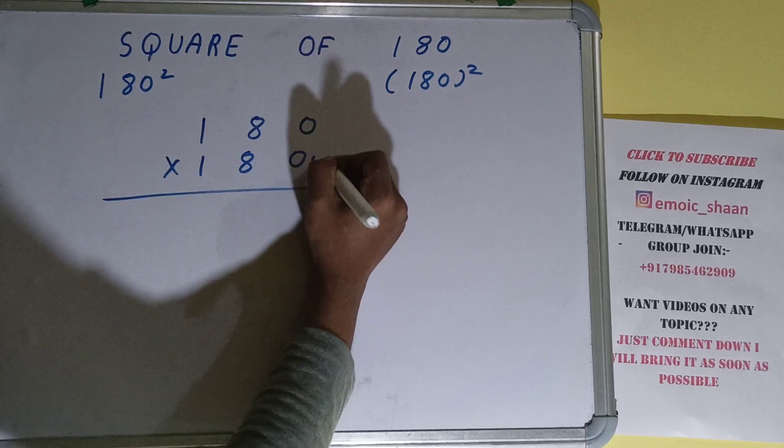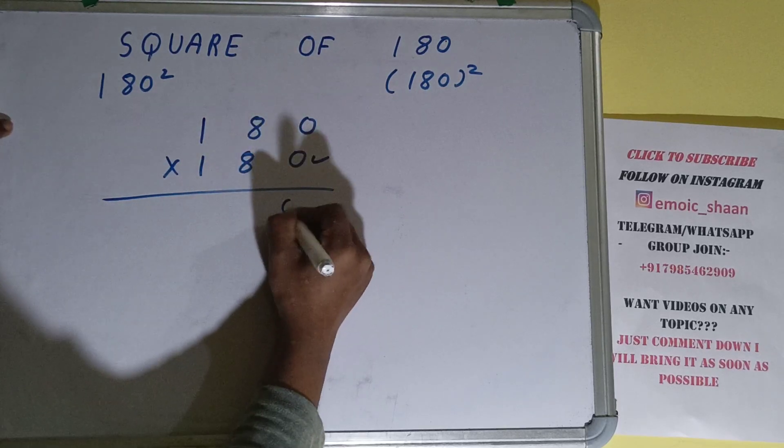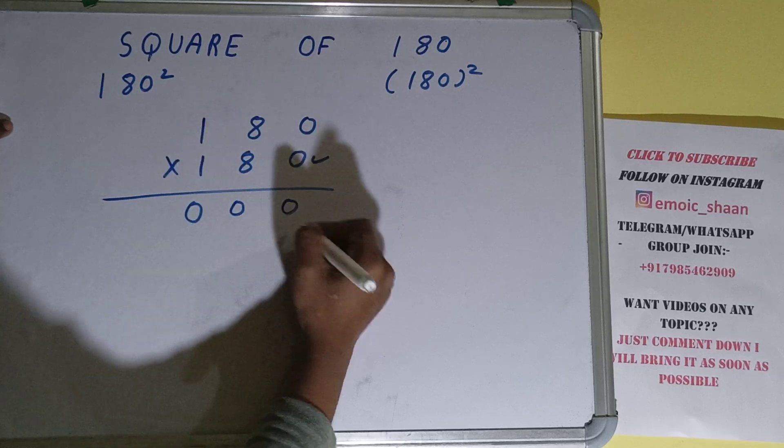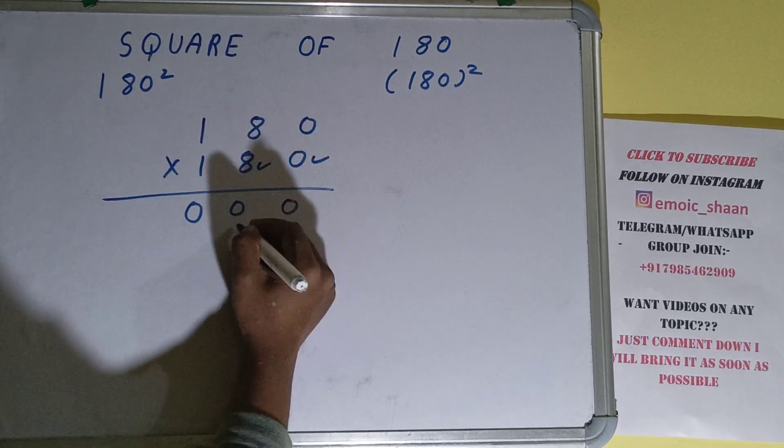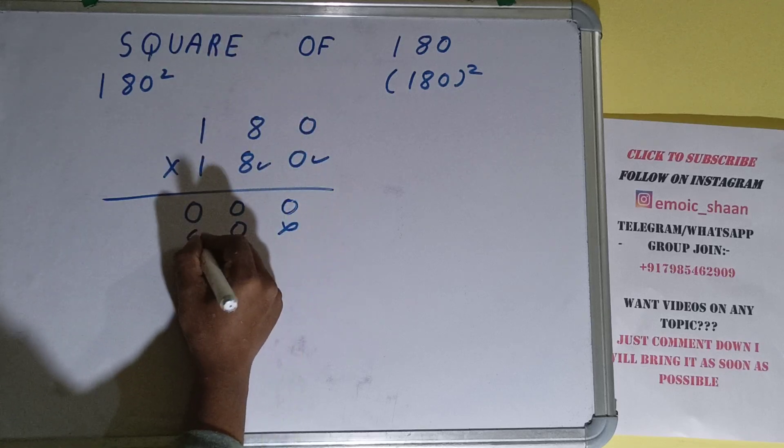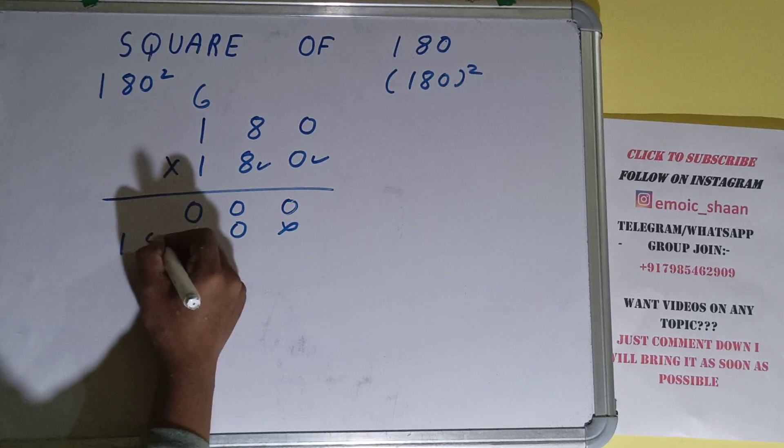So let's begin with zero. Now zero into anything is zero, so we can just write three zeros because we know the answer will be zero and it will save time. Now this 8, 8 times 0 is 0. 8 times 8 is 64. 4 down, 6 carry. 8 times 1 is 8 plus 6 is 14. Okay, we are done with this.